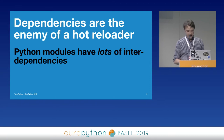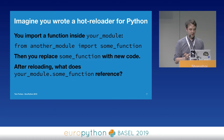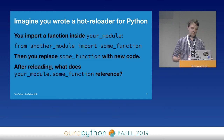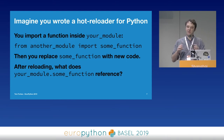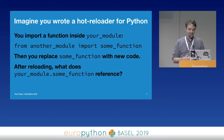Imagine writing a hot reloader in Python. You import a function from another module — you have a reference to that function. You then replace the code in that function with new code. After your hot reloader kicks in, what does your module's reference point to? If it references the old code, then your hot reloader hasn't worked properly. You could go through and find all references to that function, hot reload those as well, cascade through the whole tree of objects. It sounds really complicated and it's impossible to do in the general case safely.